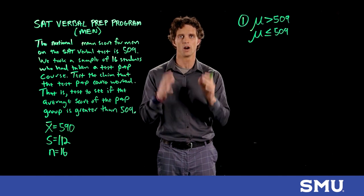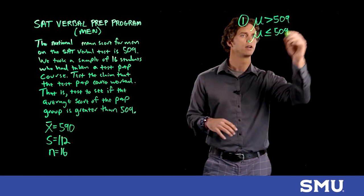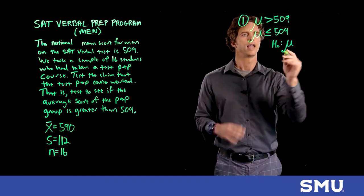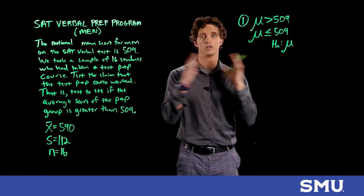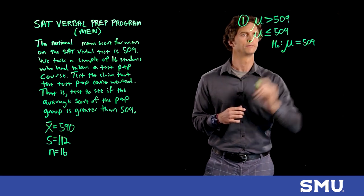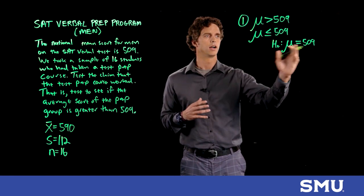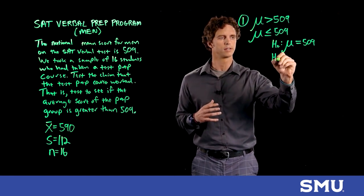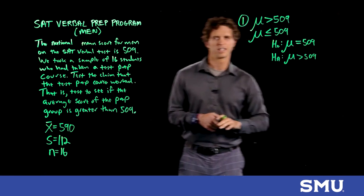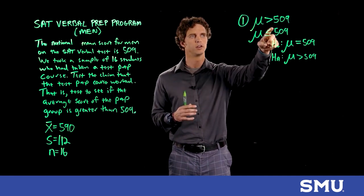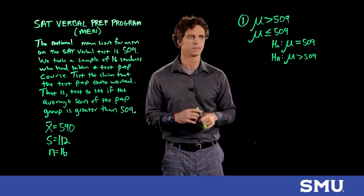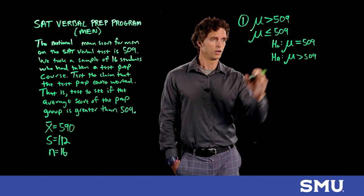The direct opposite is mu less than or equal to 509. Remember, the equal sign always goes to the null hypothesis. So H₀ is mu equals 509 — we drop the less-than-or-equal-to and simply assume mu equals 509 under the null. The alternative hypothesis is mu greater than 509. In journals and white papers you'll see it both ways, but the null will just show mu equals 509.